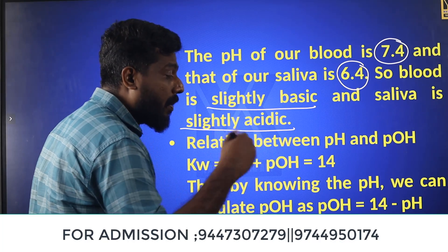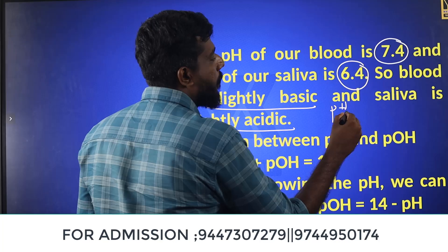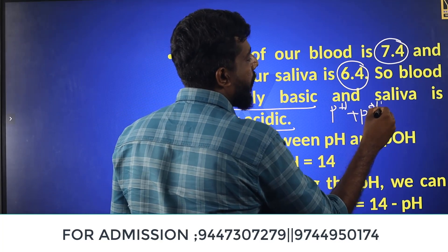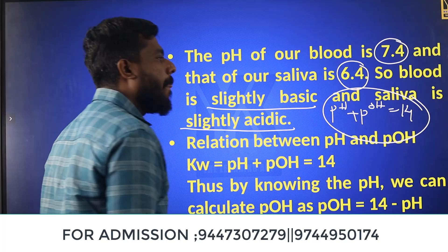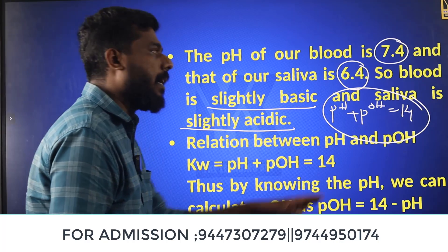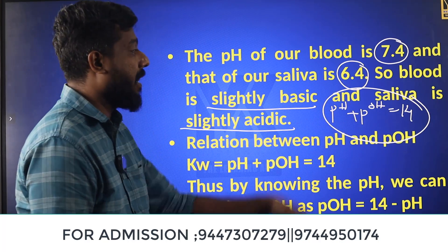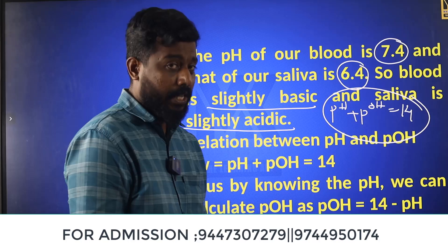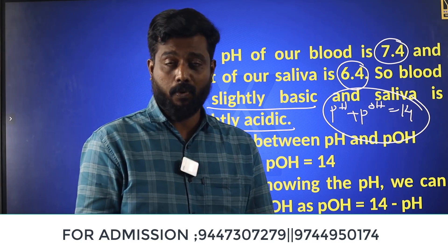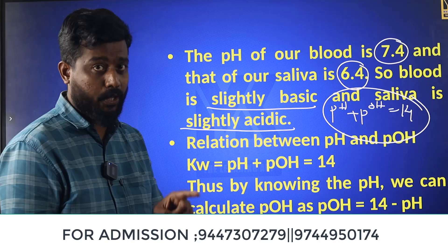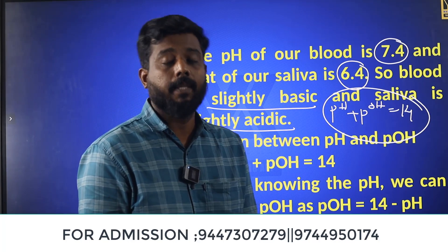Now, pH and pOH. The relationship is: pH plus pOH equals 14. Let's look at the details — pH plus pOH equals 14.